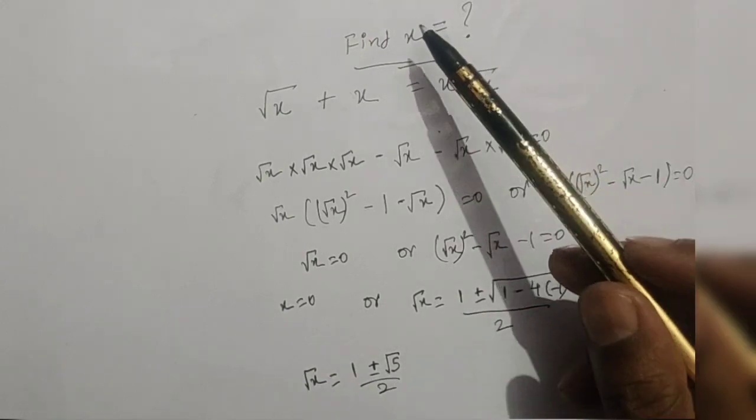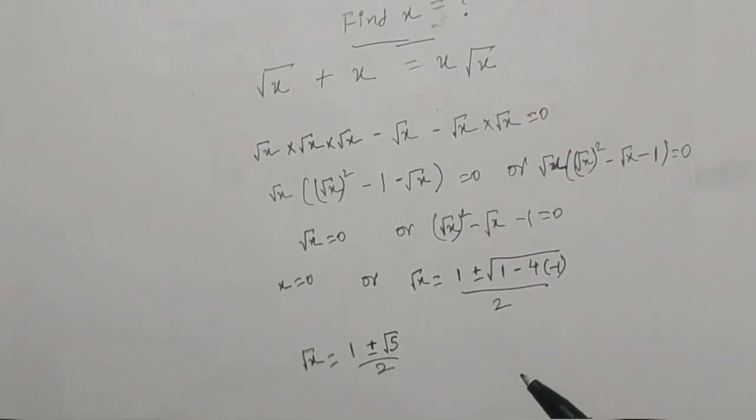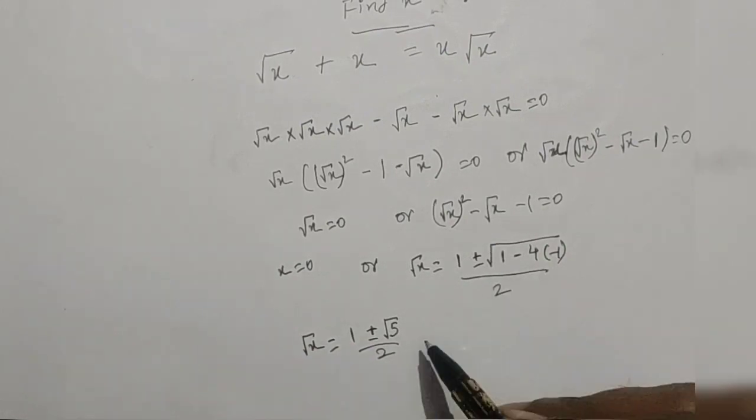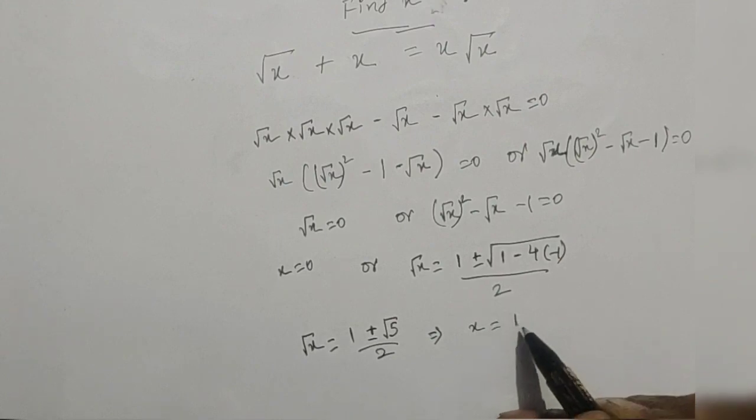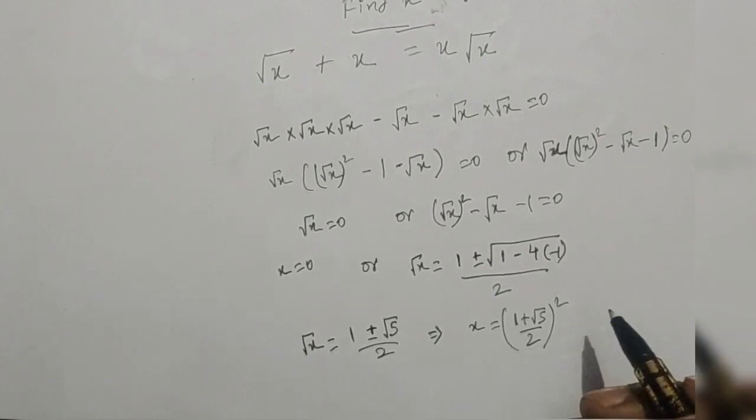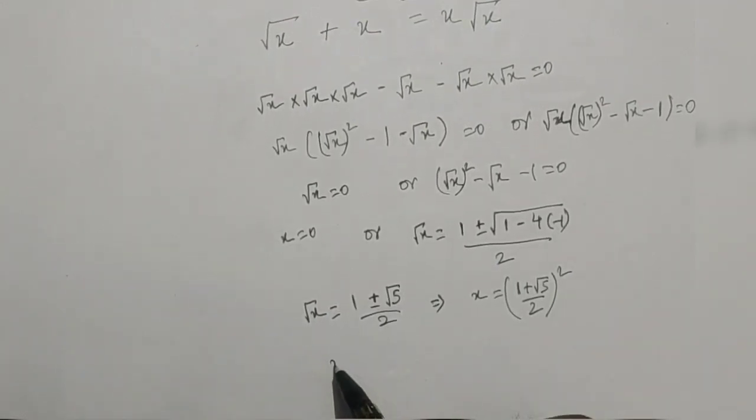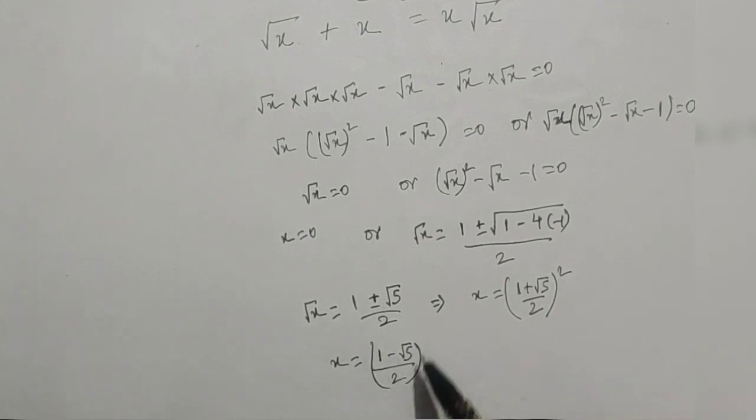This is the value of root x but we have to find the value of x. So x equals (1 plus root 5 by 2) squared, or the other value is x equals (1 minus root 5 by 2) whole squared.